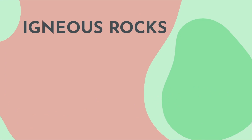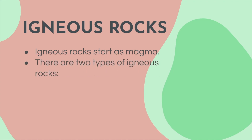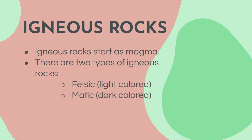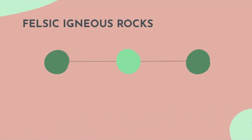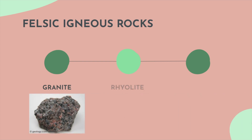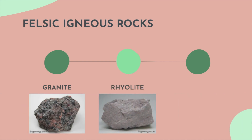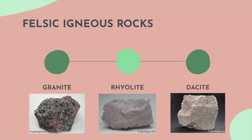The first one we're going to talk about is igneous rocks. Igneous rocks start as magma. There are two types of igneous rocks: felsic, which is light colored igneous rocks, and mafic, which is dark colored igneous rock. Felsic igneous rocks look like granite, rhyolite, and dacite. They look pretty cool.